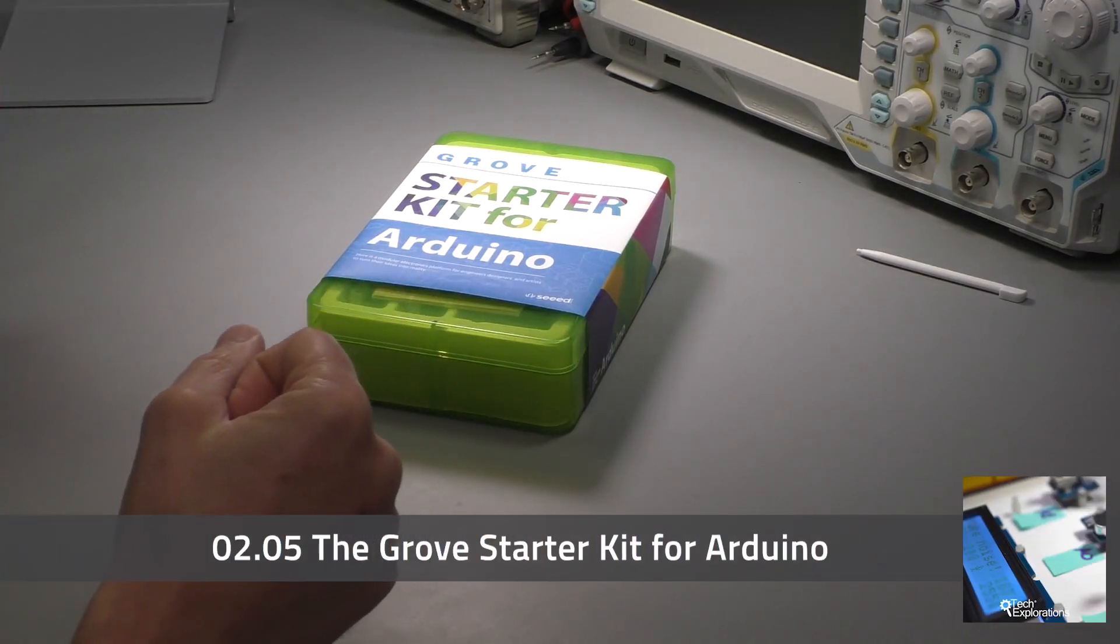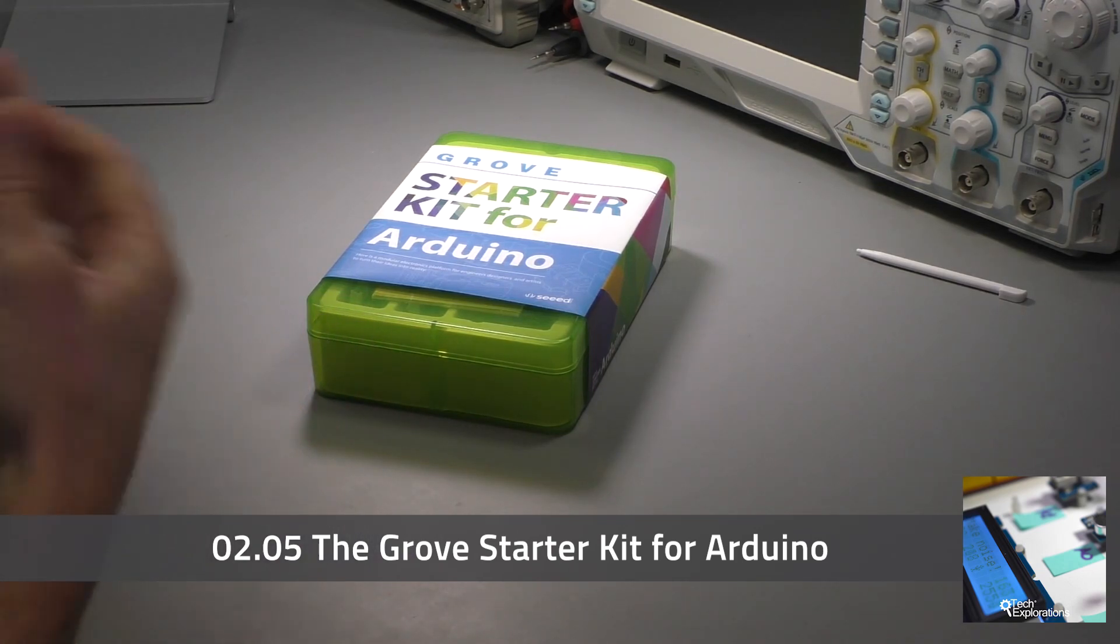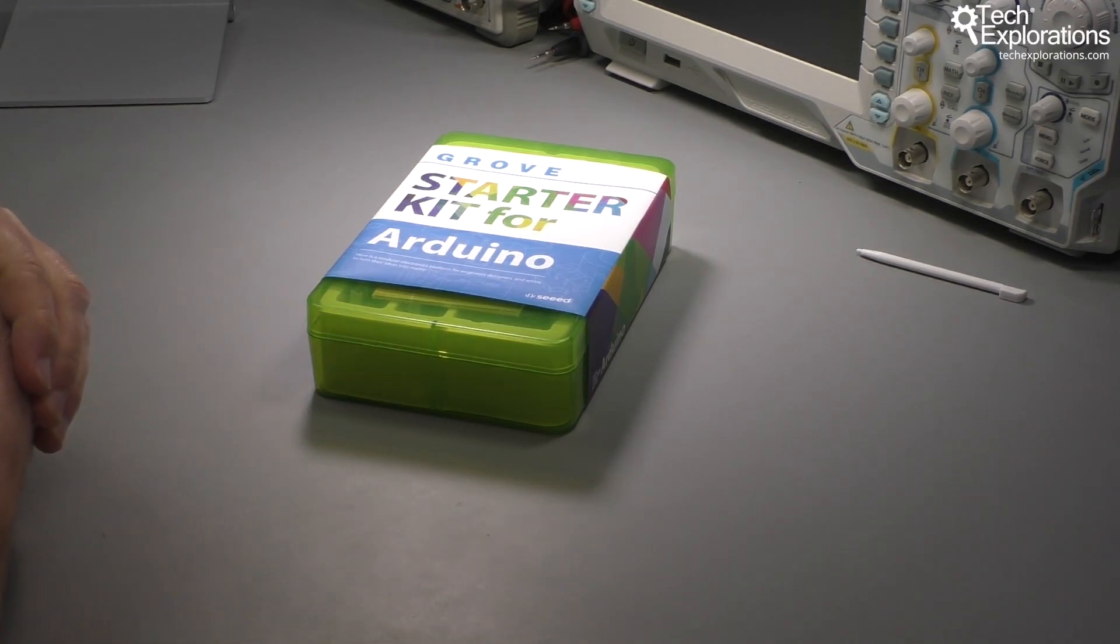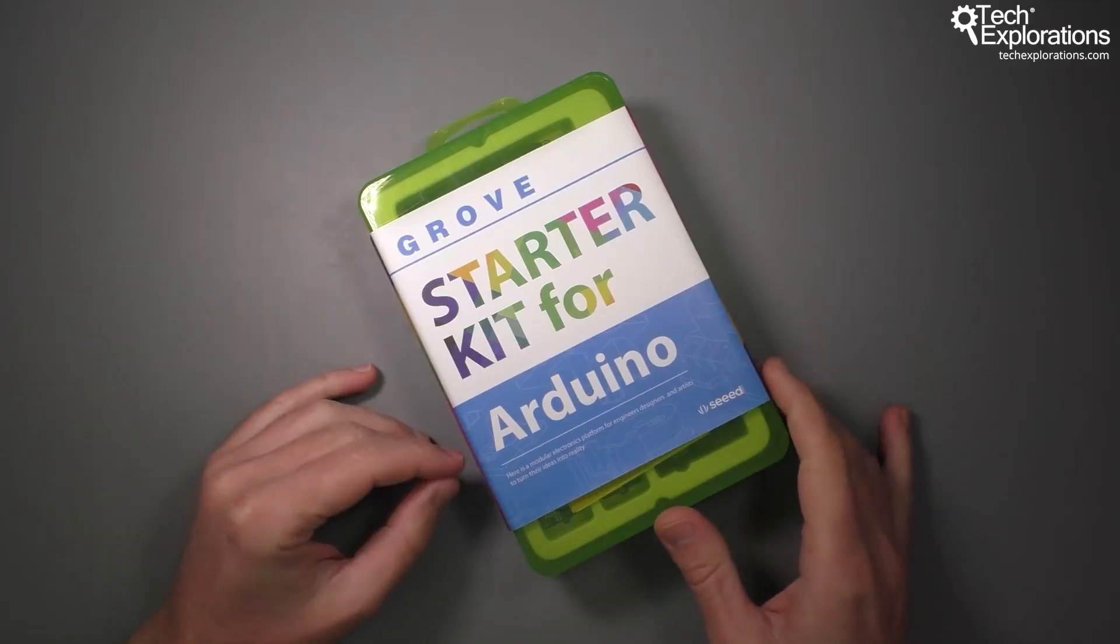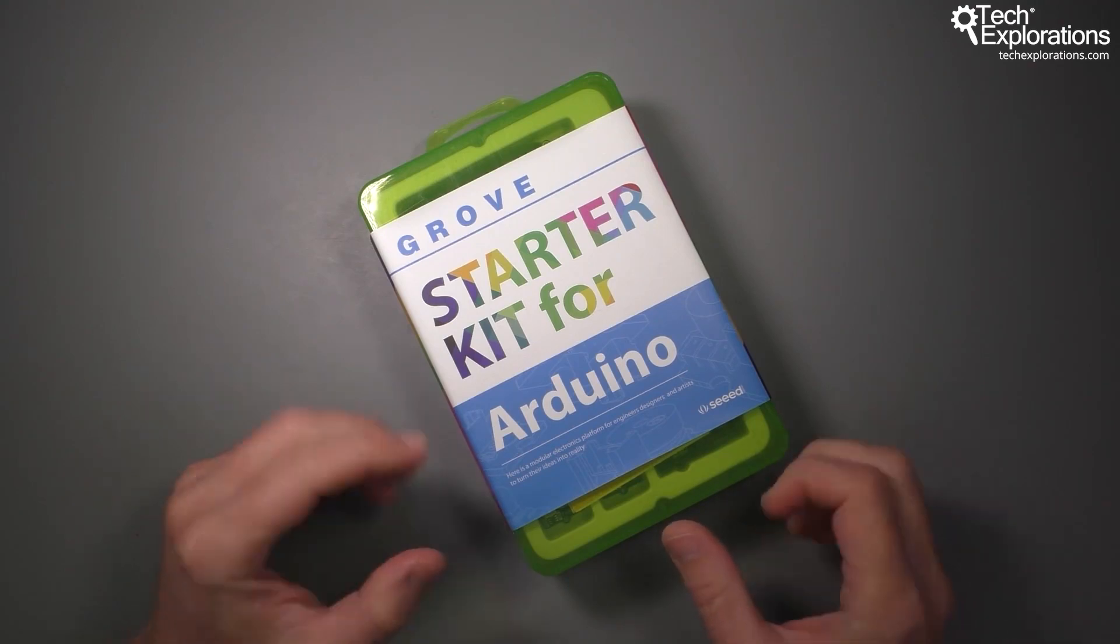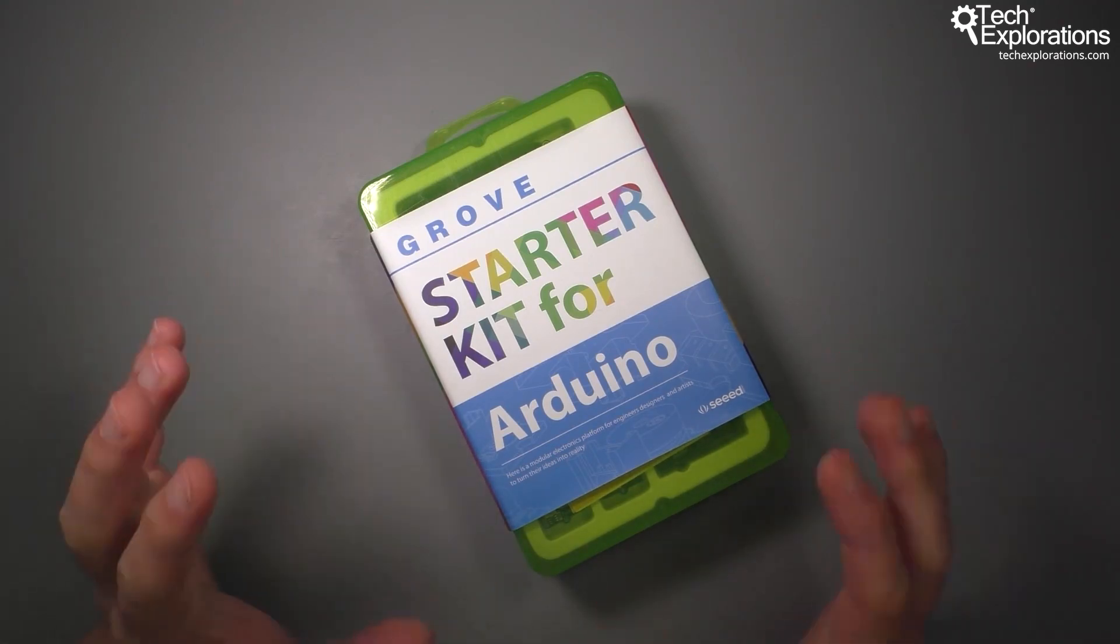In this course we'll be using the Grove system of components for the Arduino, specifically the components that come with the Grove starter kit for Arduino. In this lecture I'm going to dive into these components, have a look inside the box, and one by one briefly present what each component does.